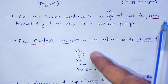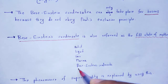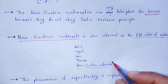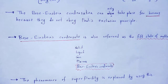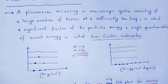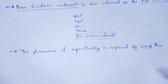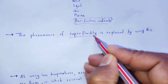So the states of matter are solid, liquid, gas, plasma, and Bose-Einstein condensate, which is called the fifth state of matter. The phenomenon of superfluidity is explained by using Bose-Einstein condensation.